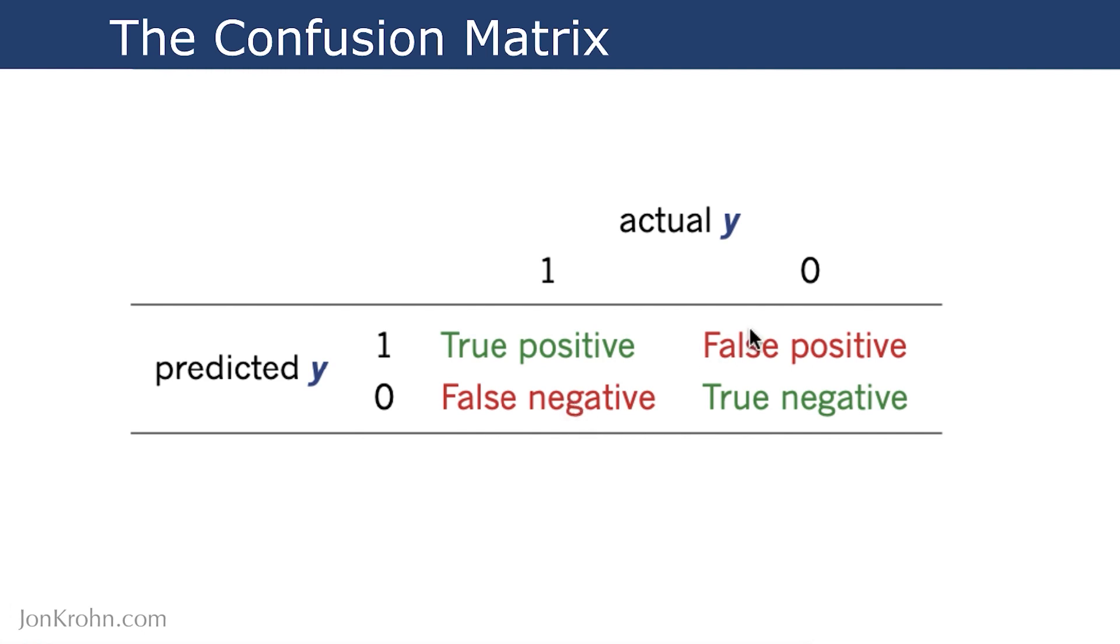On the other hand, in these situations in red, the algorithm is confused. If there really is a hot dog in the image, but our algorithm says there isn't, that is a false negative.